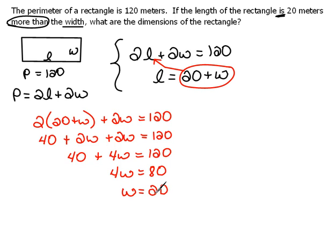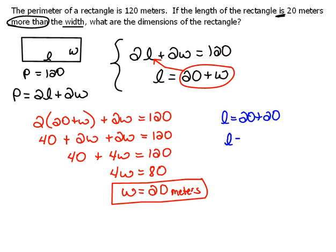So that tells us that the width is 20 meters. Now we still have to find the length. But we know, because of this equation up here, that the length is 20 plus the width, which we already found to be 20 meters. So that tells us then that the length is 40 meters.